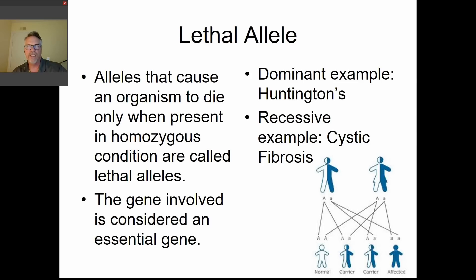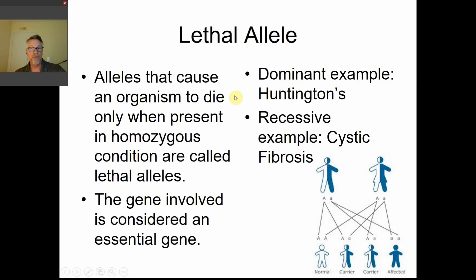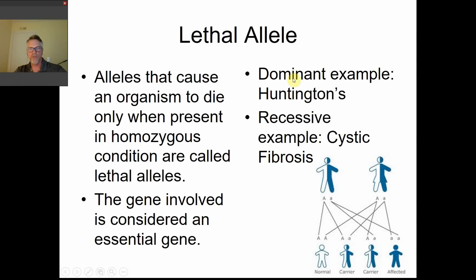We need to touch on the idea of lethal alleles. A lethal allele is something that can kill you if you're a homozygote — alleles that cause an organism to die only when homozygous. An example of a dominant lethal allele is Huntington's disease: if you have at least one dominant allele for the Huntington's gene, you'll die from Huntington's. For a recessive trait like cystic fibrosis, you need two bad copies — two recessive alleles — and then you suffer from cystic fibrosis.